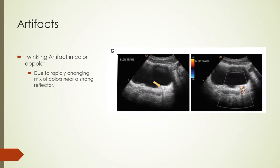In color Doppler imaging, blood flow is color-coded red or blue for blood moving toward or away from the transducer, respectively. Twinkling occurs when there is a rapidly changing mixture of colors due to a strong reflector like a calcification. The shadow beyond the structure in B-mode confirms a strong reflector, while twinkling is seen in the color flow image at that location.